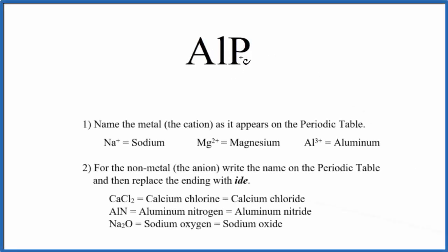To write the name for ALP, we first need to recognize we have an ionic compound here. That's because we have a metal bonded to a nonmetal. Metal and nonmetal, that's an ionic compound.